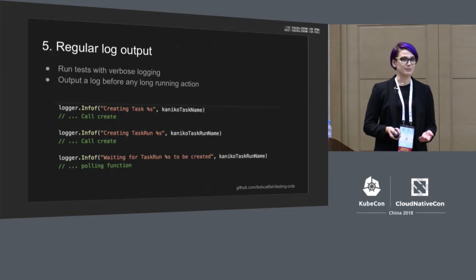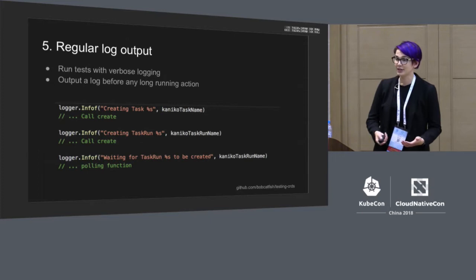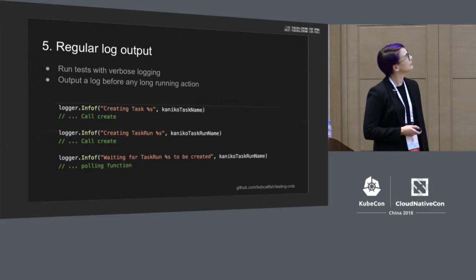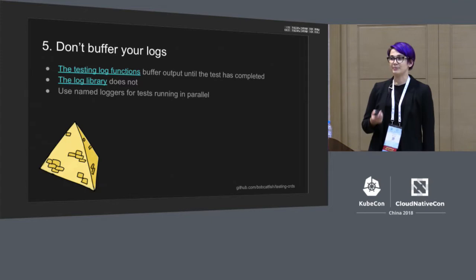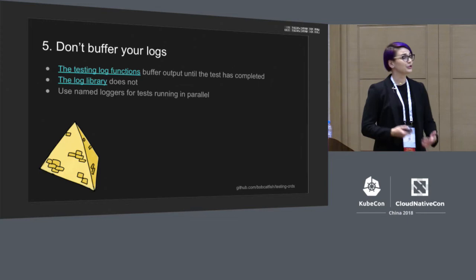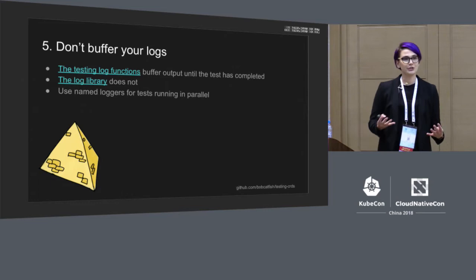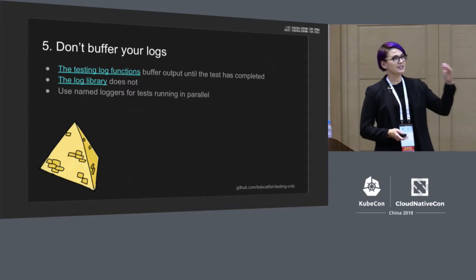If you're doing all this polling, your tests might look like they're hanging. So I recommend regularly outputting information about what your test is doing — log a statement explaining what's happening before doing something that takes a while. It's important to note that if you use the log functions in the testing library, your output will be buffered, meaning you won't see it until the test completes, which defeats the purpose. Use an unbuffered library. Even better, use a named logger so you can run tests in parallel and see which test each log line came from.